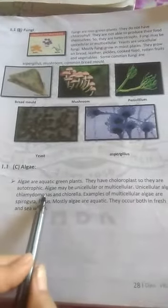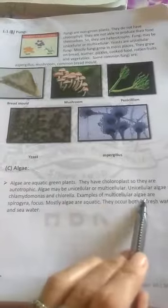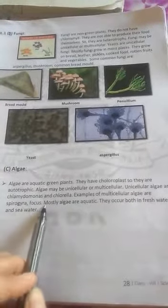Unicellular algae include chlamydomonas and chlorella. Examples of multicellular algae are spirogyra and fucus. Most algae are aquatic — they occur both in fresh water and sea water.